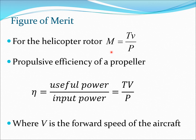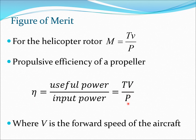Now let us look at a comparison with the propeller. For a helicopter rotor, M would be T·v / P, where v is the induced velocity and T is the thrust produced by the rotor, and P is the rotor power. If you compare it with the formula for the propulsive efficiency of a propeller — that is given by T·V / P, where capital V is the forward speed of the propeller — you can clearly see a similarity between these two expressions.